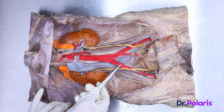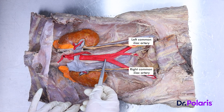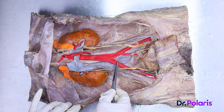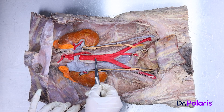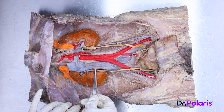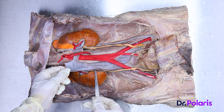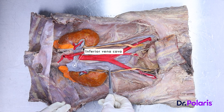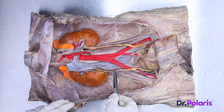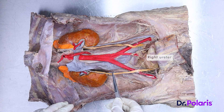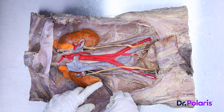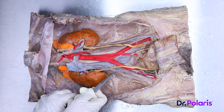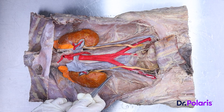The abdominal aorta goes down and divides into the right and left common iliac arteries. To the right of the abdominal aorta, we see a vein — we can identify it as a vein because of its collapsible lumen. This is the inferior vena cava. Next to the inferior vena cava on the right side is the right ureter. Then we see muscles — the first one, just medial to the right of the inferior vena cava, is the psoas major.